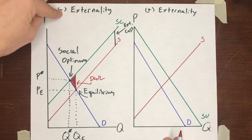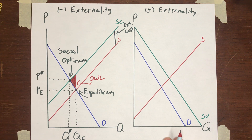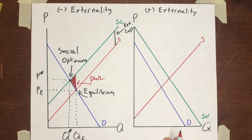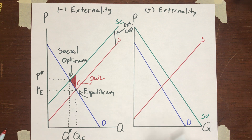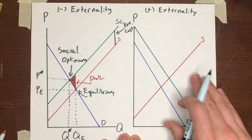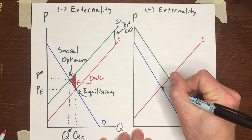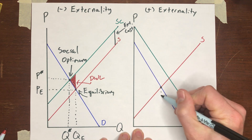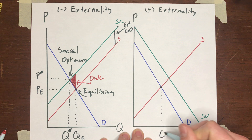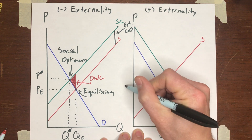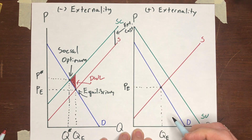So if there is a negative externality, we expect the market to produce too much of this good — there's overproduction. QE is greater than Q-star, and we don't want to see that. The situation is going to be very similar for a positive externality. The equilibrium is going to be at QE units and PE units.